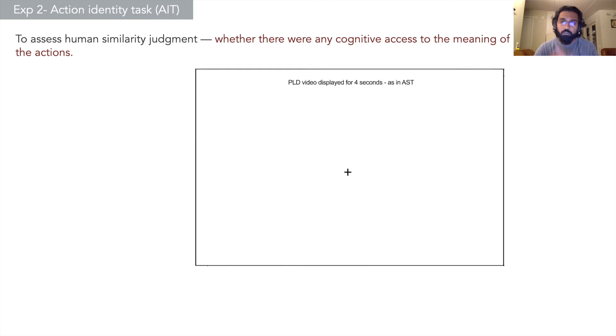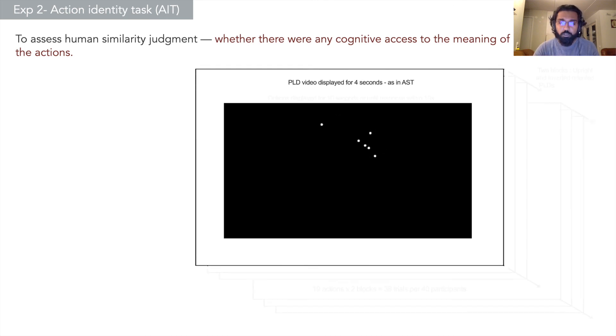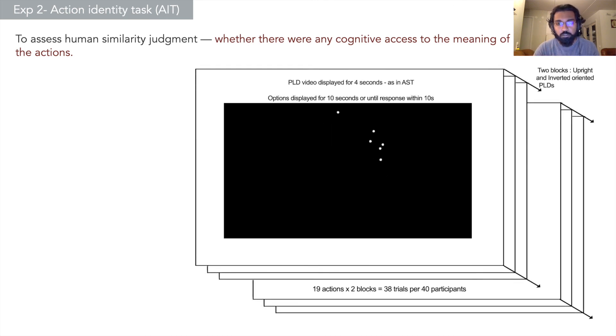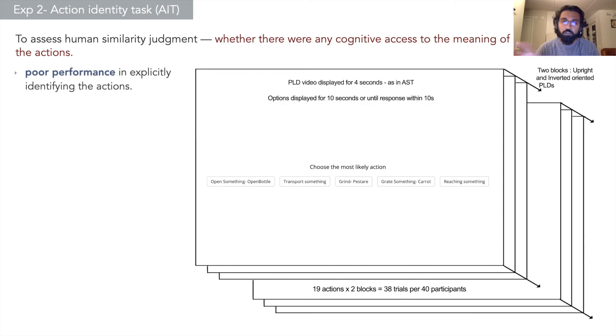The second experiment assessed explicit semantic access. In this case, we gave them point light displays as in the similarity task and asked them to choose a label which they think is likely. The results show that participants showed poor performance in identifying the actions.